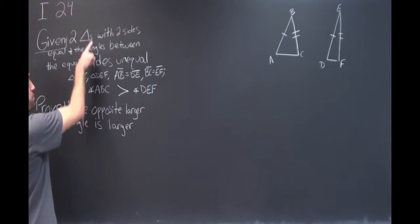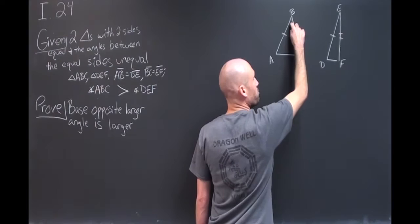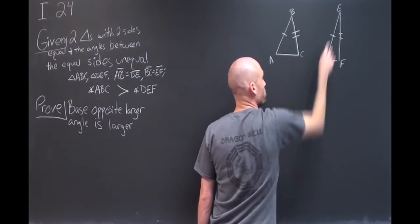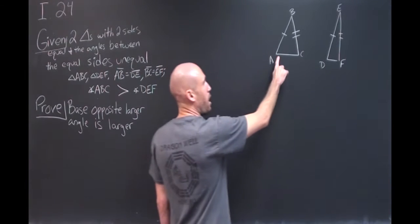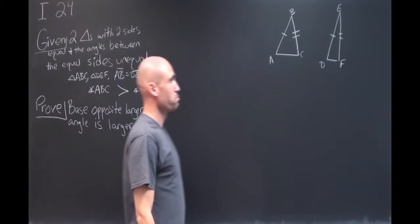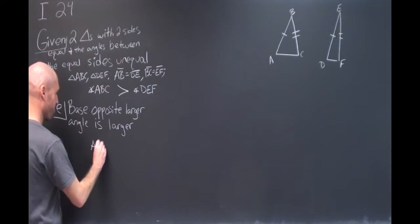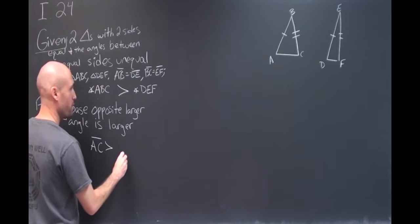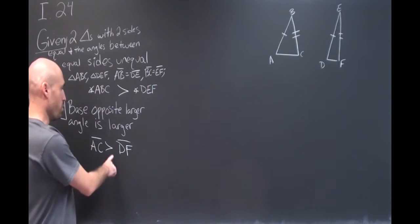So generally if we get two triangles where we have two sides equal and the angle between the two sides, one is larger than the other, what we're going to prove is that the base opposite the larger angle is larger than the other base. This is what we're looking to prove.